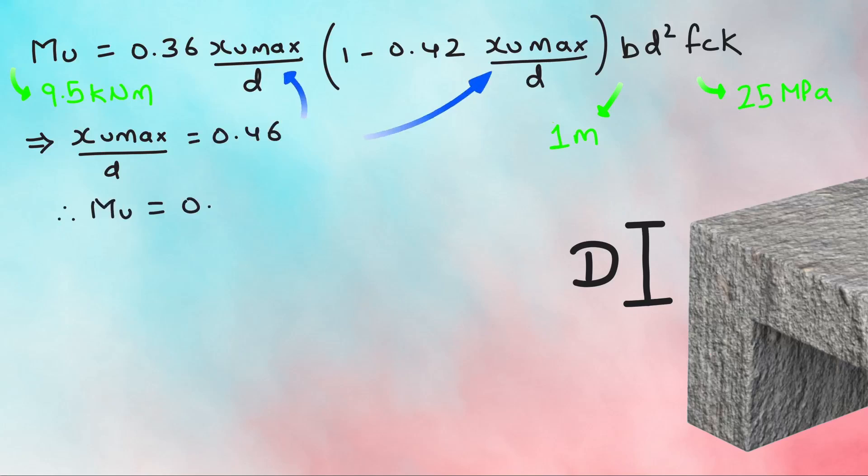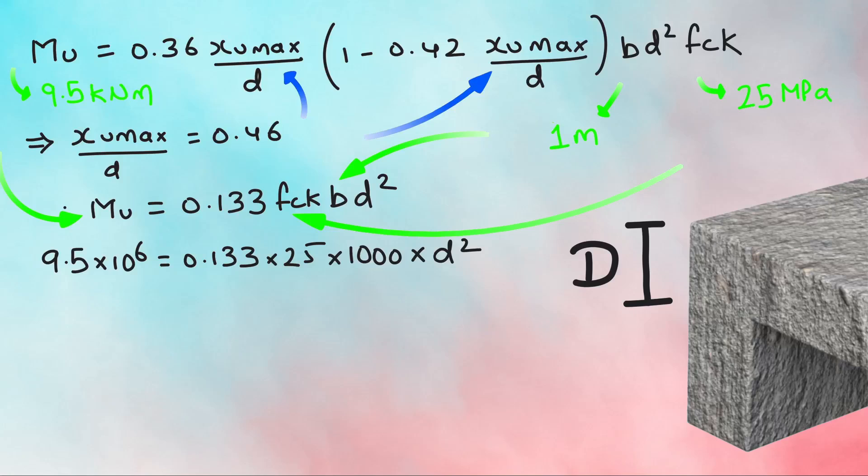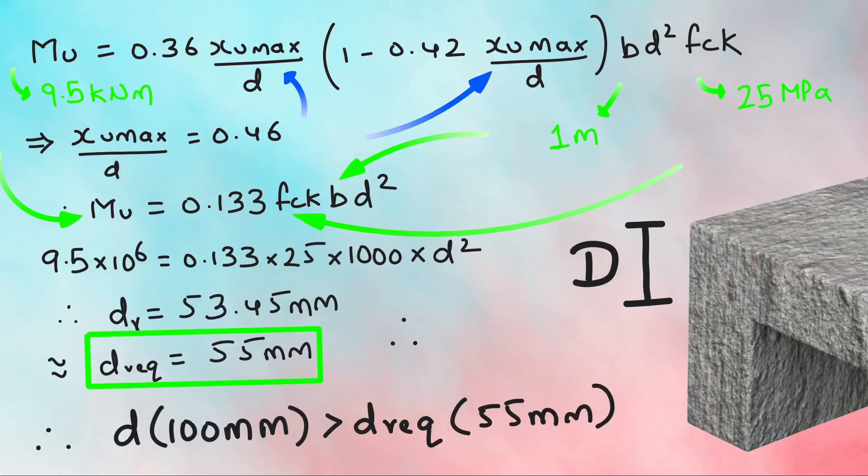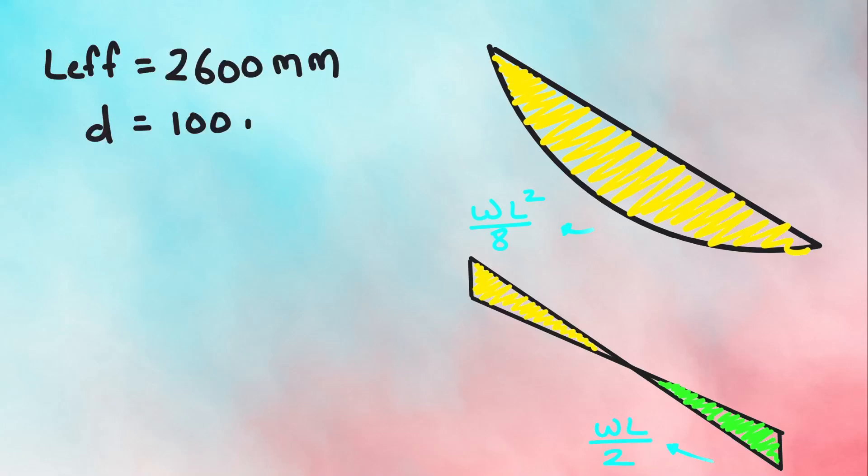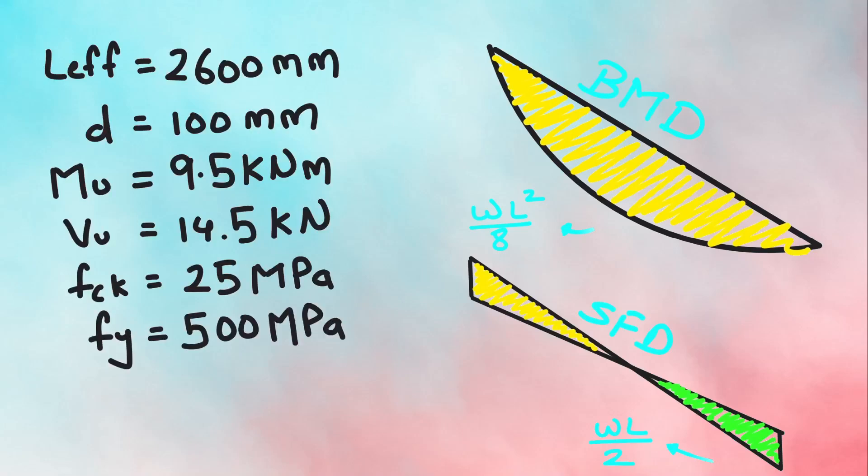Substituting the values of MU, FCK, and B, we will get the required depth of the slab for factored bending moment as 55 mm. On comparing with the depth we have taken, the required depth is less. Hence our assumption is correct and we can proceed with the effective depth of 100 mm. With this, we have all the parameters required to design the slab for bending, shear, and deflection.